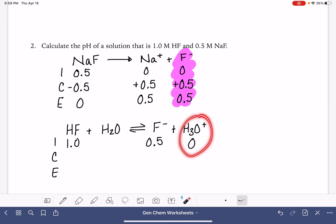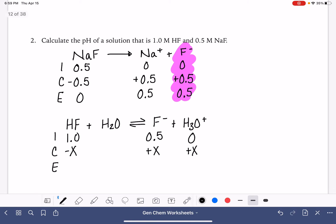Still starting with 0 H3O plus. So for our change, we don't know what that reaction is. We don't know the extent to which this reacts. So we're still going to use X. We have 1.0 minus X, and we're going to assume that X is really small, and it's just 1.0.